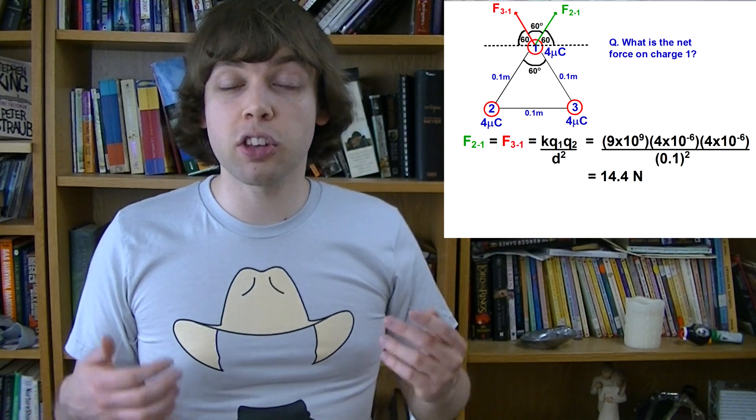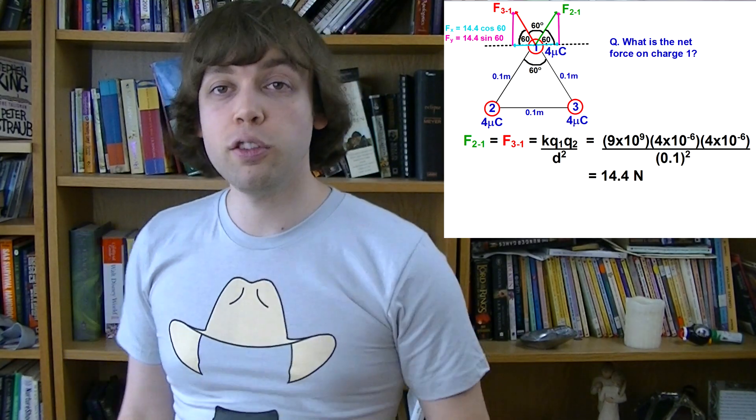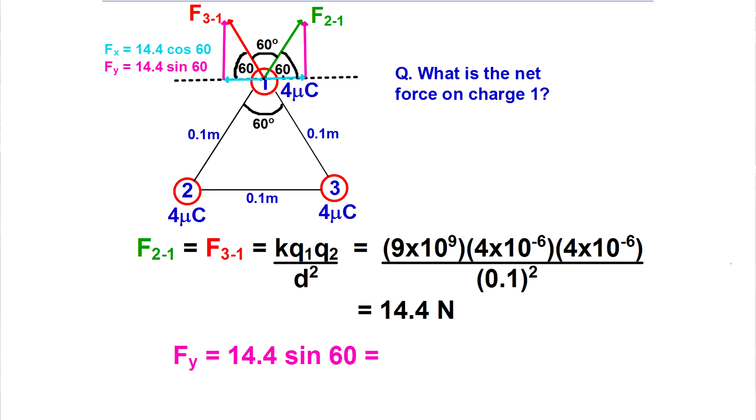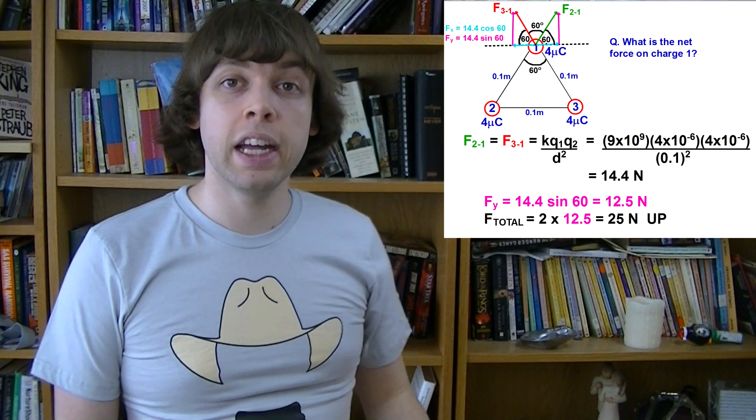This situation is perfectly symmetrical, so that saves us a lot of effort and time. In fact, because of that, we only need to break one of these forces into components, because the components of the other one will be exactly the same. If you use SOH CAH TOA, the blue vectors come out as 14.4 cosine 60, and the pink vectors come out as 14.4 sine 60. But notice how the blue vectors are pointing in exactly opposite directions? They cancel each other out. So the net force in the x direction is going to be 0. These pink vectors are both pointing in the same direction, so we'll have to calculate that one. 14.4 sine 60 comes out as 12.5 newtons. Since there are two pink vectors pointing upwards, we can multiply that number by 2 to get the total upwards force. That gives us 25 newtons. So the total force on charge 1, due to charges 2 and 3, is 25 newtons up.